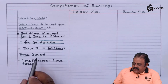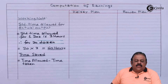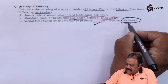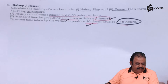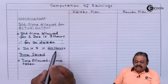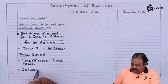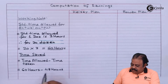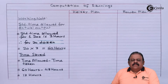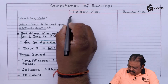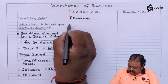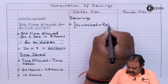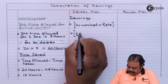To find out time saved, we are required to deduct time taken from time allowed. In the question, 20 dozen articles are produced by spending 48 hours. So time allowed is 60 hours, time taken is 48 hours, and therefore time saved is 12 hours.